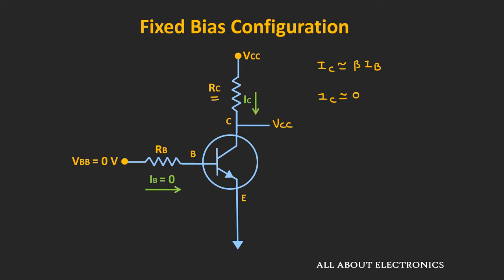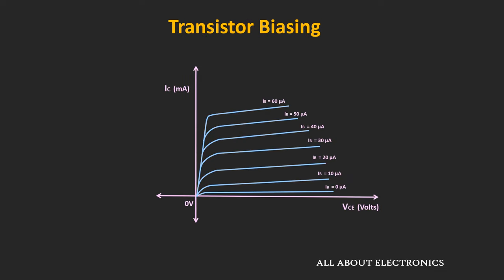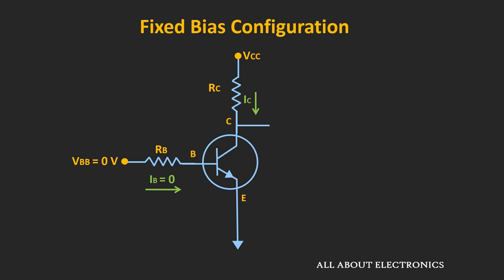If we see the operating point, then the operating point would be somewhere around here. So we can say that whenever the base current Ib is equal to zero, then the collector current Ic is also approximately equal to zero and the voltage Vce is equal to Vcc. That means the BJT is operating in the cutoff region. So just by looking at the circuit, we can make out that the BJT is operating in the cutoff region.